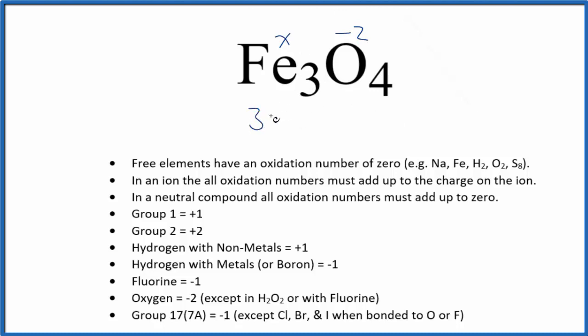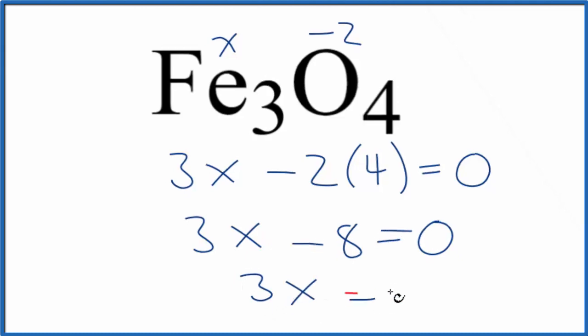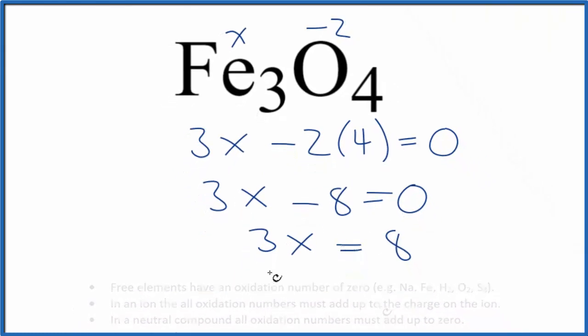So three times X, three X minus two, and we have four of those. That's going to equal zero. Let's move this down. So three X minus eight equals zero. Three X equals eight. Divide both sides by three, and we end up with X equals eight thirds.